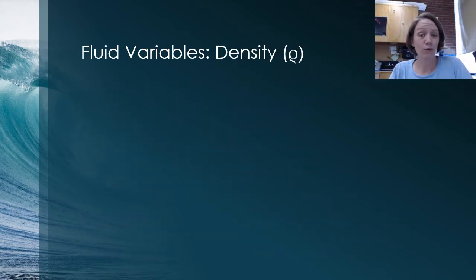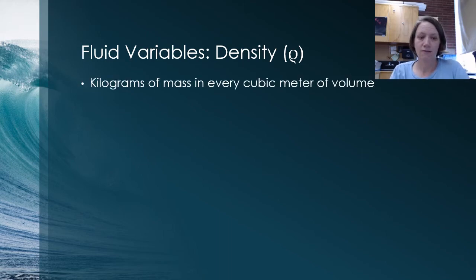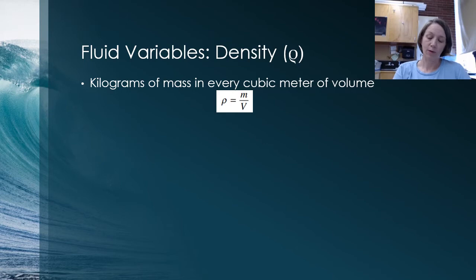The second important fluid variable is density, which is represented by the Greek symbol rho. It kind of looks funny in the font that I have on there. I usually sort of draw it as a P, a single stroke P, but anyway, that's the letter rho in Greek. And density is defined as the kilograms of mass in every cubic meter of volume. So if I have a cubic meter of something, how many kilograms would that something weigh or have of mass? So the equation based on that definition is just rho equals M over V. That's just the definition of that unit, that variable.